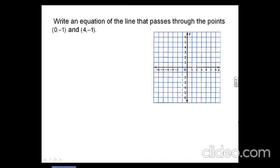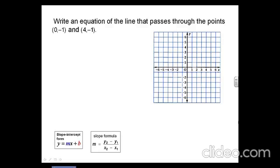Write an equation of a line that passes through the points (0, negative 1) and (4, negative 1). Although it is not necessary to use a graph to answer these questions, visual aids are oftentimes helpful, so we've decided to include one anyway. We're also going to use slope-intercept form and the formula for slope. Next, we're going to plot our two points on the graph and then sketch our line. Notice that the line appears to be horizontal.